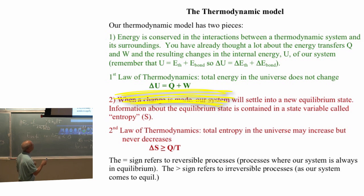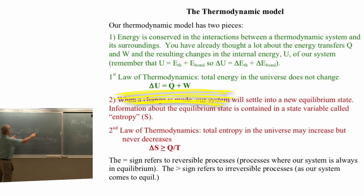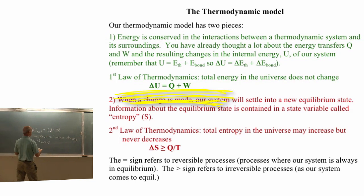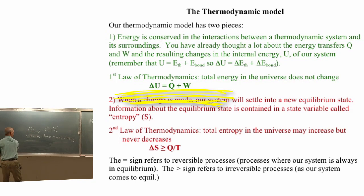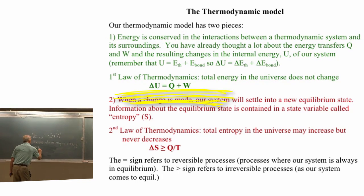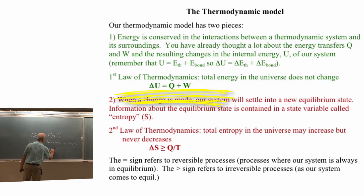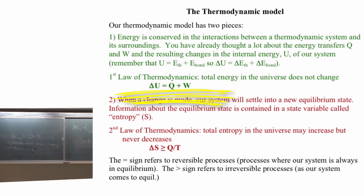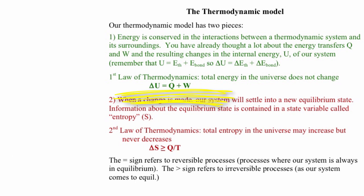First law of thermodynamics is one that you already know. I've already written it. Delta E total equals Q plus W. If you have only internal energies changing, then delta U is Q plus W. Thermodynamics is about internal energy changes primarily. So here's one that you've seen the whole quarter. The internal energy change can only change if you've added or taken energy out.